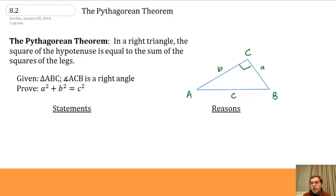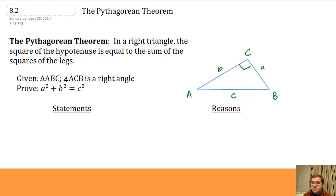We're going to use one way to prove it here that builds off of what we did in section 8.1. The theorem states: in a right triangle — you need to have a right triangle or this does not work — the square of the hypotenuse is equal to the sum of the squares of the legs. The hypotenuse in a right triangle is the longest side, the side opposite the right angle. So when I take the length of the hypotenuse and square it, I get something equal to the sum of the squares of the two legs.